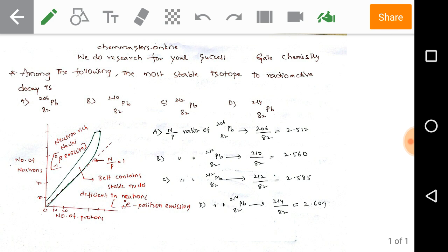By emitting positrons, neutron-deficient nuclei get the neutron to proton ratio nearer to one, achieving stability.